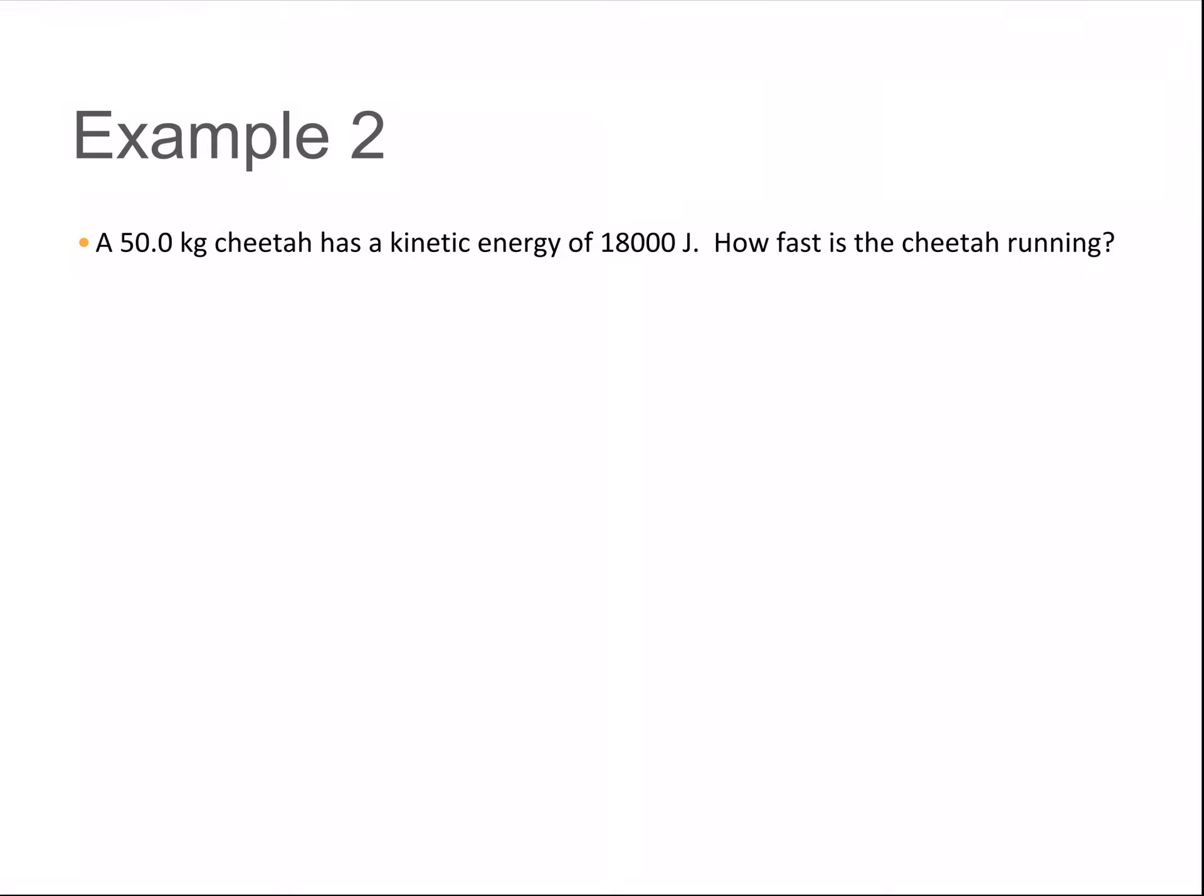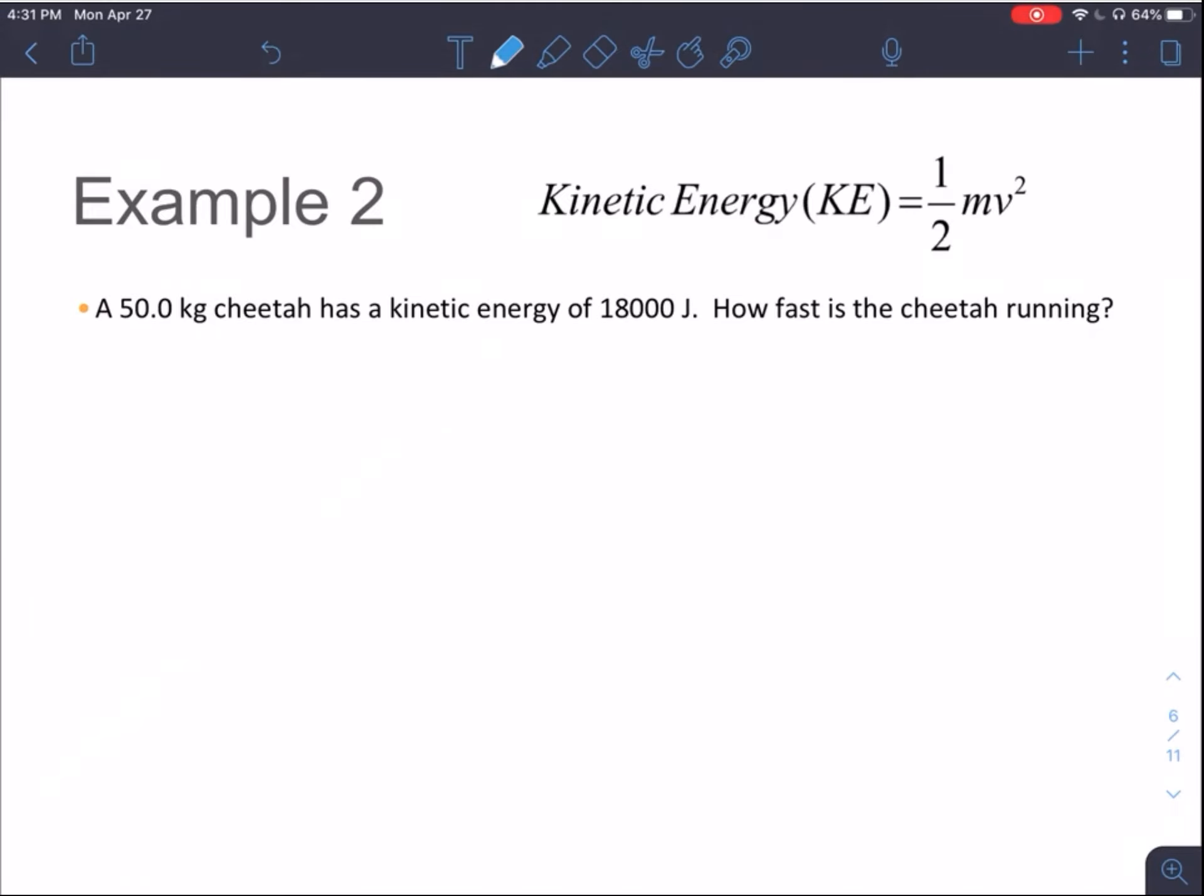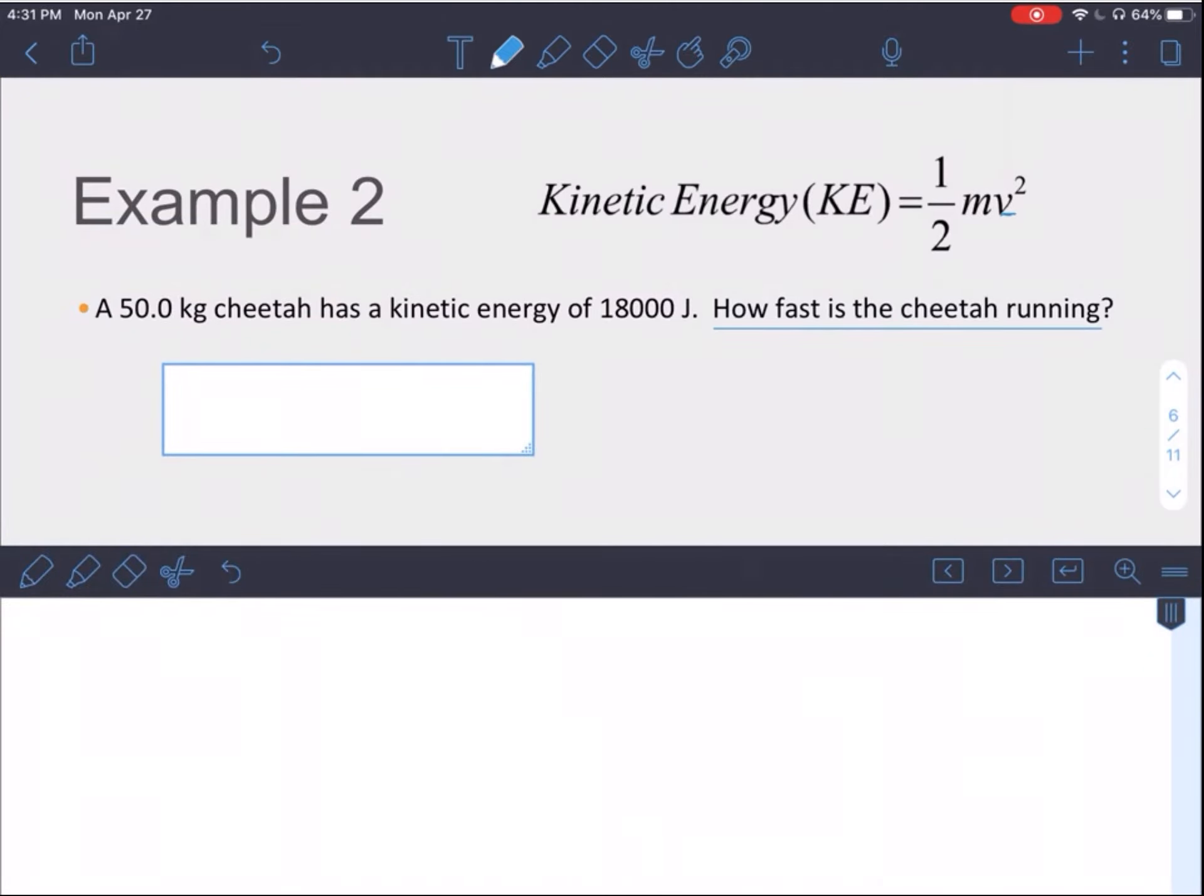Let's try one more out. So a 50 kilogram cheetah has a kinetic energy of 18,000 joules. How fast is the cheetah running? Pause the video. Try this calculation on your own. When you're ready for the answer and explanation, press play. So in this problem, we are not solving for kinetic energy. We are given the kinetic energy. We will be solving for velocity. We want to know how fast the cheetah is running. So how you do this, you can either plug the values in, then solve for the variable. Or you can rearrange the equation so that V is all by itself. Then plug everything in. We are going to plug everything in and solve for V.